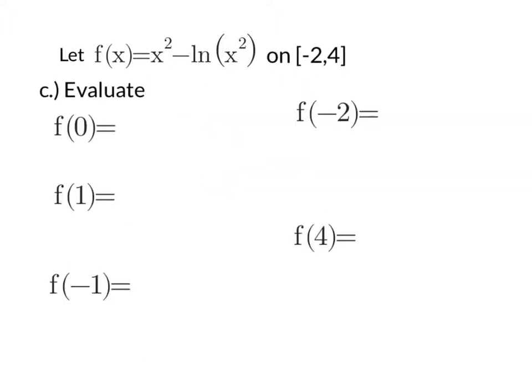In part c, we're asked to evaluate each critical number. Since we found our critical numbers to be at 0, 1, and negative 1, all we have to do is plug them in. So f of 0 is going to be 0 squared minus the natural log of 0 squared. Since we can't take the natural log of 0, this expression is going to be undefined or does not exist.